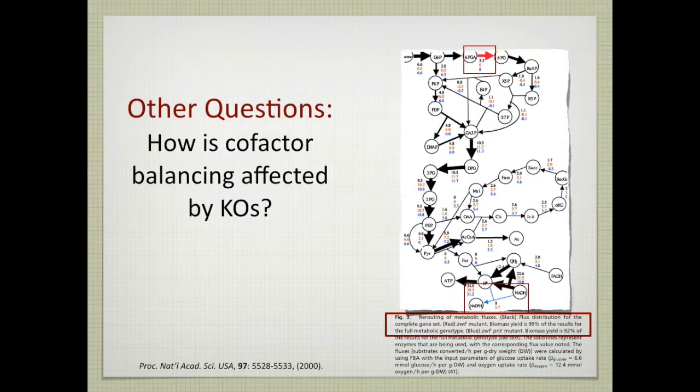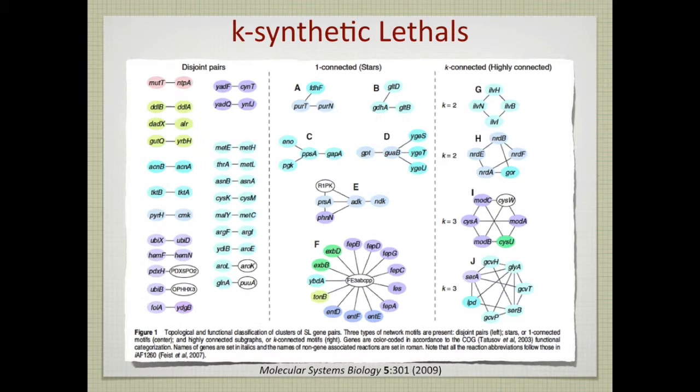And this also speaks to the issue of network redundancy. A lot of thinking about gene essentiality at that time was focused on isozymes. So you knock one out, there's another isozyme for it. But this is a network version of that. You remove a function, and it can now be produced somewhere else in the network. Okay, so that's the sort of thing you can do.